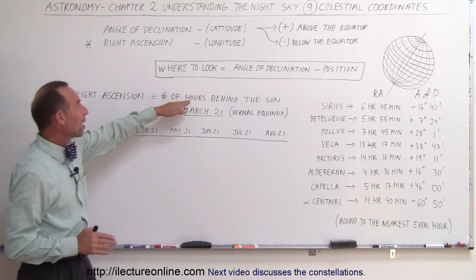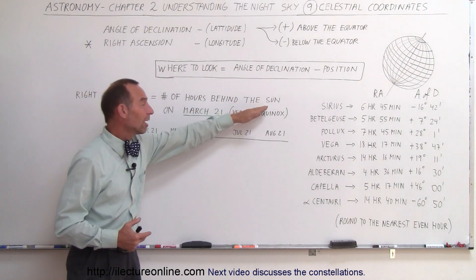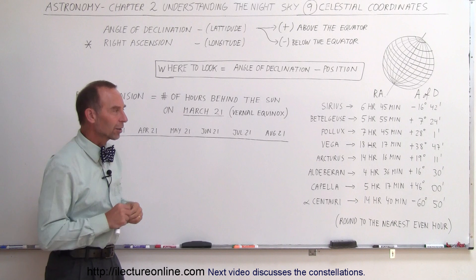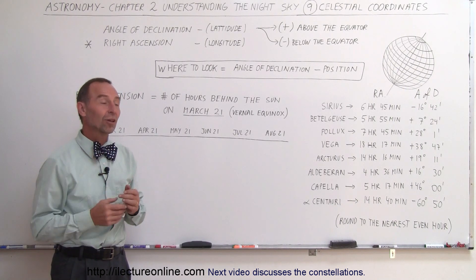It's the number of hours the object, the star, the constellation, whatever it may be, is behind the Sun on March 21st. That's during the vernal equinox. On that day, the Right Ascension is the number of hours behind the Sun.